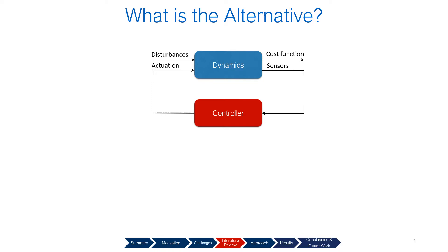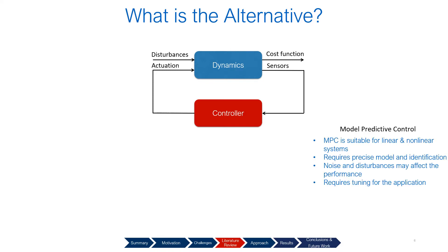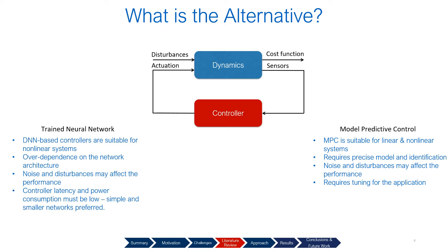Let's first look at model-based control — specifically model predictive control. It is suitable for linear and nonlinear systems, but it requires a precise model and identification. Noise and disturbances can affect performance and it requires a tuning process. Considering learning-based controllers: they are also suitable for nonlinear systems, but data collection requires effort. Similarly, noise and disturbances can affect performance, and better performance with a very deep structure comes at a cost in computation time.